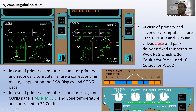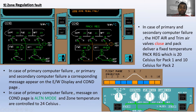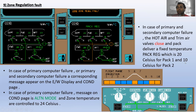In case of zone regulation fault, due to primary computer failure or primary and secondary computer failure, a corresponding message appears on the engine warning display and conditioning page. With primary computer failure, the con page shows 'alternate mode' and sound temperature control goes to 24°C. With both primary and secondary computers failed, hot air and trim air valves both close, and packs deliver a fixed temperature: 20°C for pack one and 10°C for pack two.